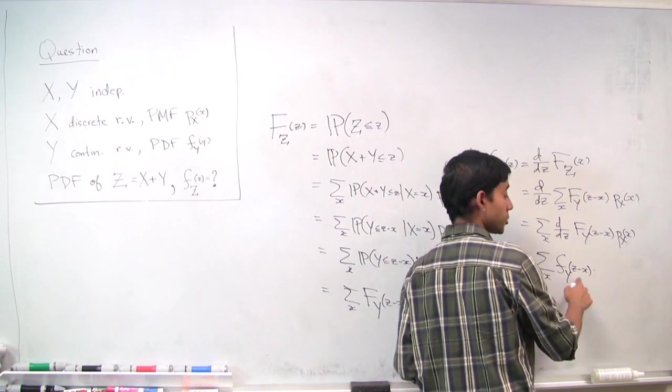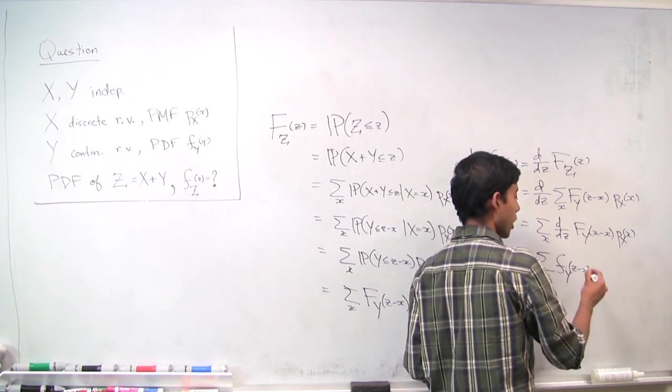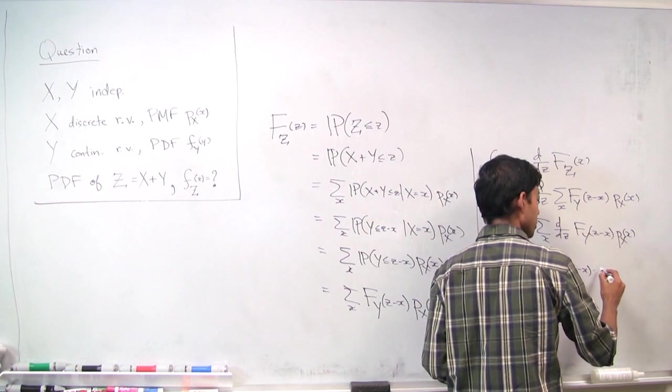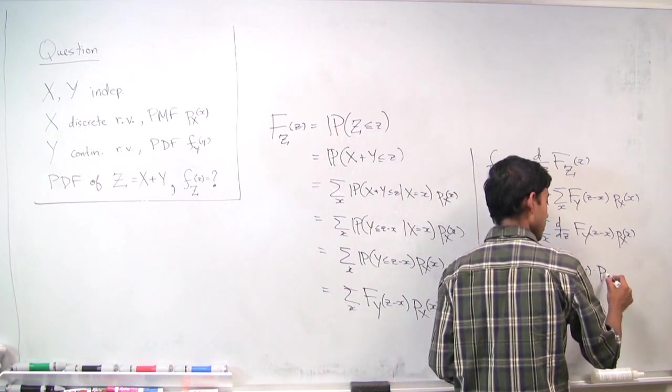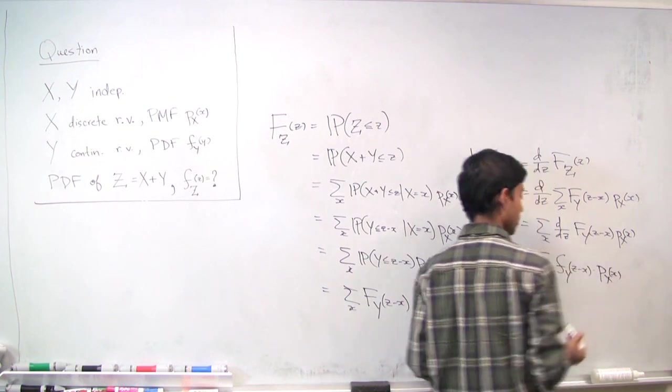And then the derivative of the inner quantity, z minus x, which is just 1, so we don't need to put anything there. And we get p_x of x. So there we go.